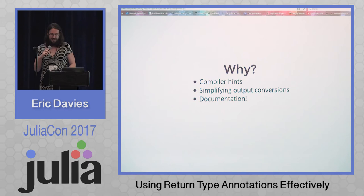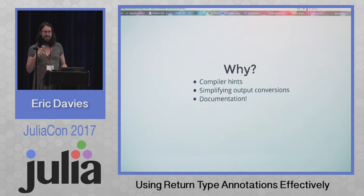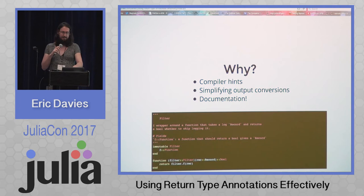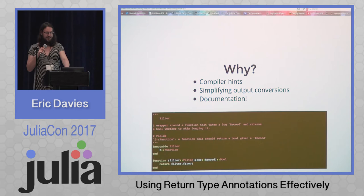Another reason is that it's just nice for documentation. Return type annotations make it clear and enforce what the type of the return value is from a function. Maybe this could be integrated with documentation or Documenter in the future, and we can generate function signatures that show return types when they're there. This is just an example from some code we have where it doesn't really matter because that filter function is always returning a bool anyway, but we've marked it there so that you can understand by looking at the code what's going to happen.